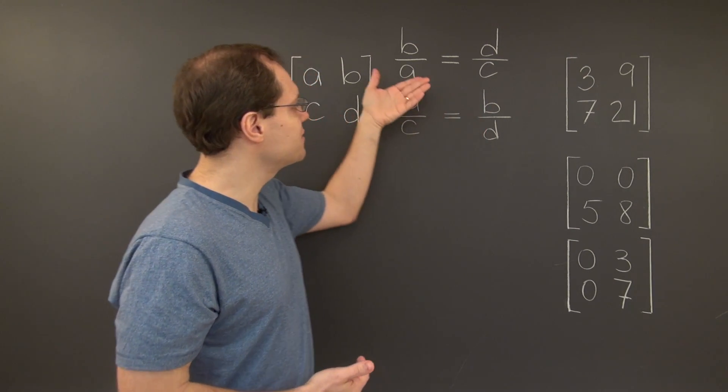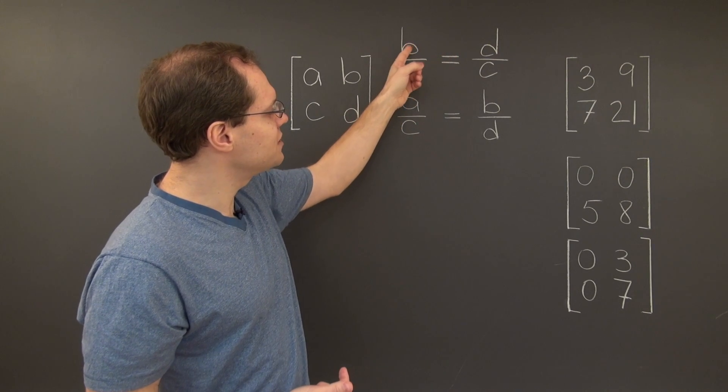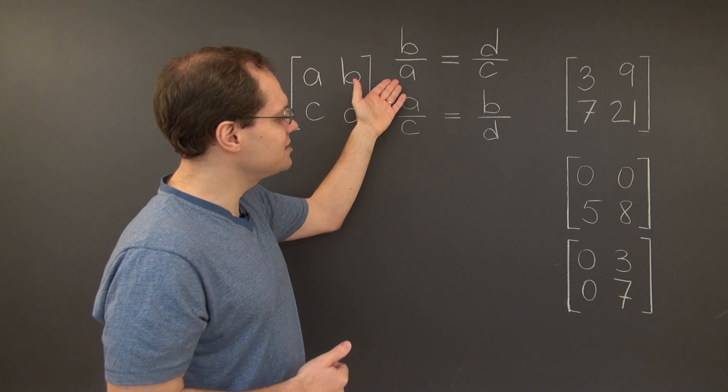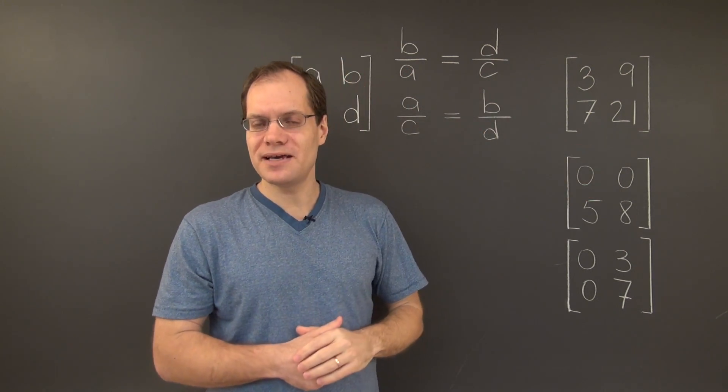Yet while this criterion works because 0 over 5 equals 0 over 8, the first criterion fails because it involves dividing 0 by 0, which is an invalid operation. So this criterion does not apply to this matrix.